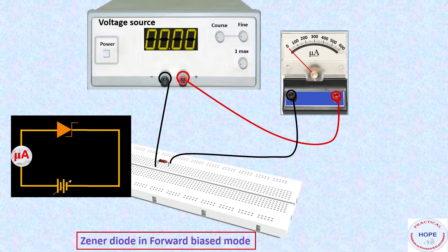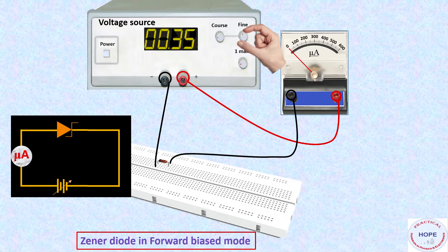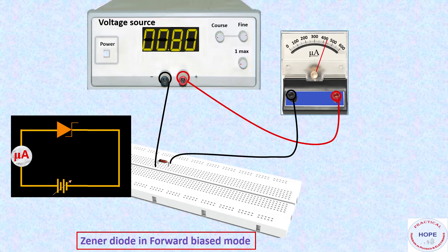Now switch on the power and slowly increase the voltage. We can see till 0.7 volts there is no significant variation in the current. If we increase to 0.75, the current increases to about 50 microamperes. Now we have to increase the voltage in very small steps: 0.76, 0.77, 0.78, 0.79, 0.8. So at 0.8 we are getting current of about 440 microamperes.